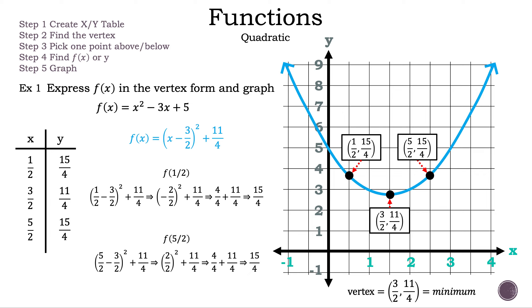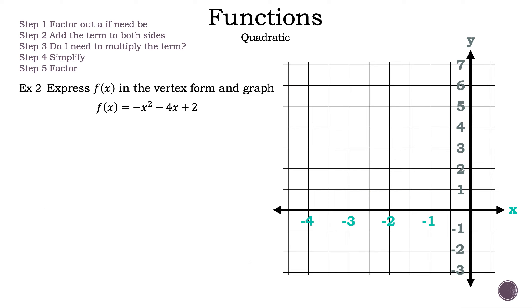Which means the output for 5 halves is also 15 fourths. Now we have two more points — let's go ahead and plot them and connect the dots. That is example 1. Now let's move on to example 2. The steps are: Step 1, factor out a if need be. Step 2, add the term to both sides. Step 3, do I need to multiply the term? Step 4, simplify. Step 5, factor.